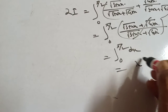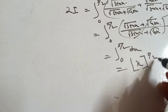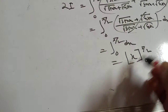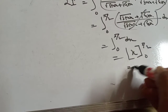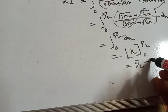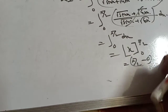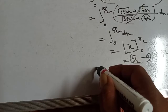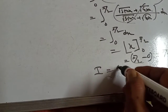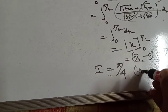That means it will be [x] evaluated from 0 to π/2. Upper limit minus lower limit: π/2 minus 0. So 2i equals π/2, which means i equals π/4. This is the answer.